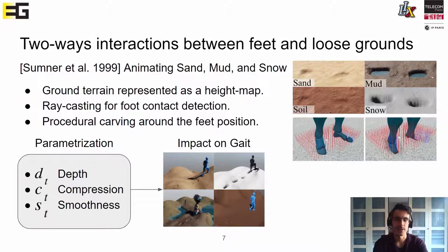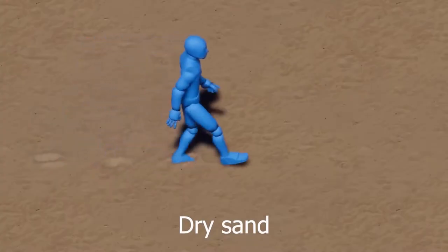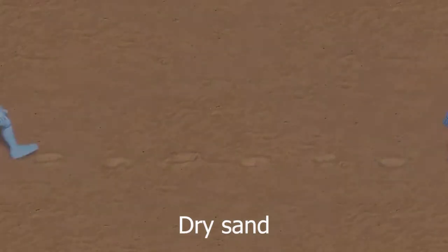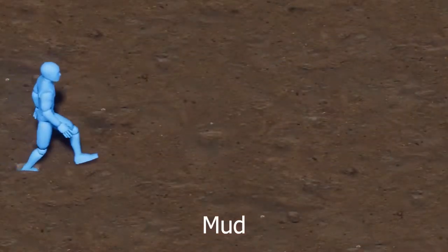The deformation on the terrain is parametrized using three scalars. First, a depth coefficient D_t defines the height to remove, such that smaller values correspond to harder terrains. Then a compression coefficient C_t defines the amount of compression the ground material can hold — materials with a larger content of air or water have higher compressibility than, for example, dry sand. Finally, a smoothness coefficient S_t defines a smoother appearance of the height map with a Gaussian filter. The inverse kinematics system, in charge of positioning the feet with respect to the ground, makes the character adapt automatically based on the deformation.